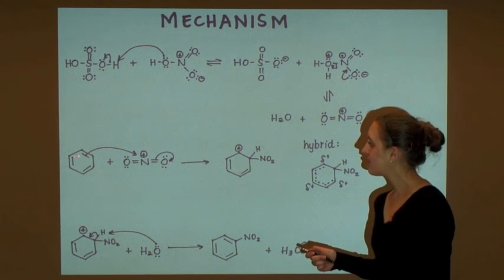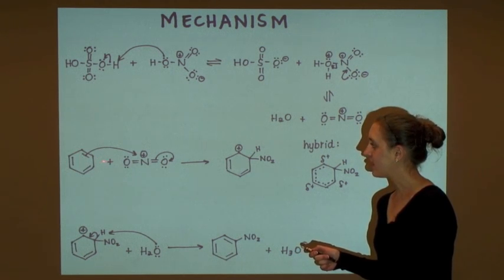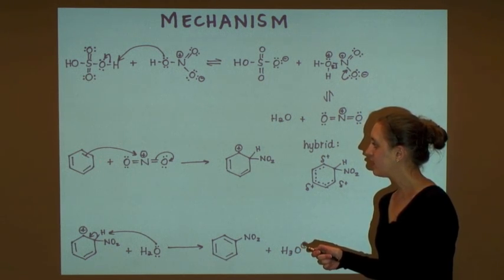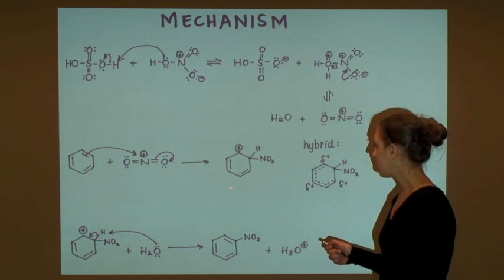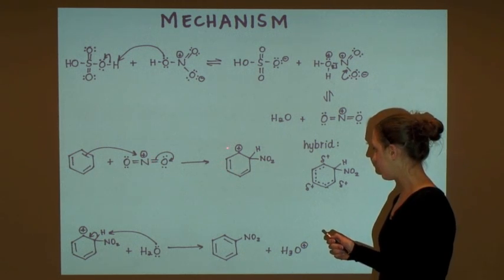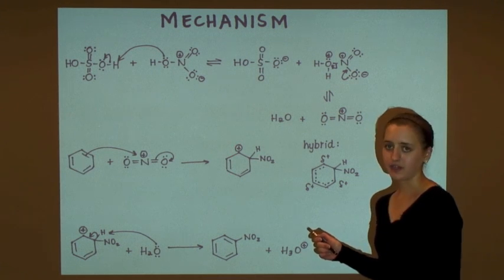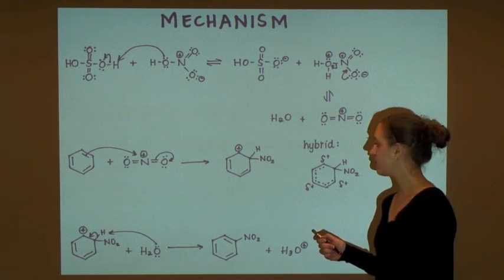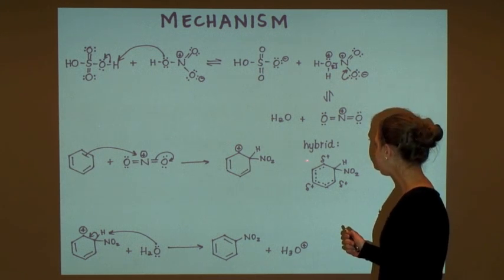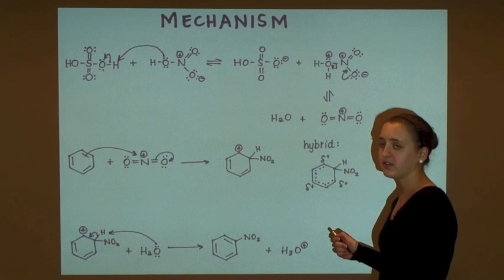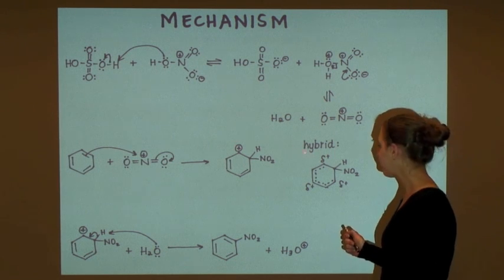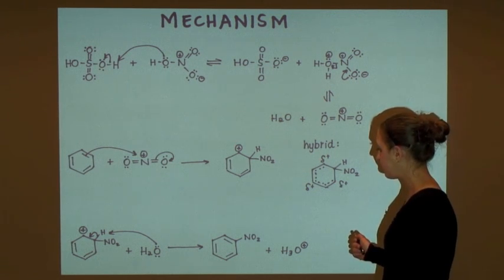In step two, the pi electrons of the aromatic ring will attack the electrophile to produce the arenium ion, which is non-aromatic yet resonance stabilized. As shown in the hybrid drawing, this positive charge is actually delocalized around the ring.